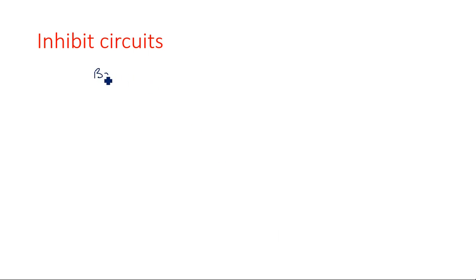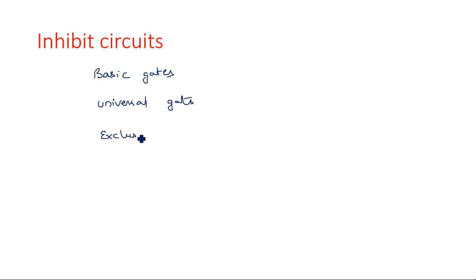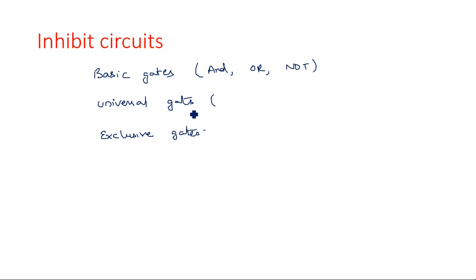Hi everyone. In this video I am going to explain about inhibit circuits. We have seen several gates in previous videos — basic gates like AND gate, OR gate, and NOT gate. Next, universal gates — NAND gate and NOR gate.